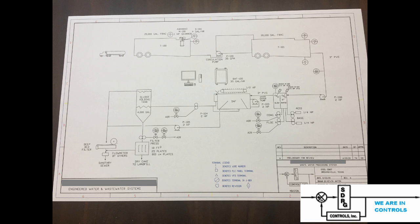The next thing to do was to develop a process diagram for this specific operation. This was a P&ID, which shows the process and instrumentation. It shows all the materials coming into the facility and all of the outflows, such as the dry cake going to a landfill and discharge going to the sanitary sewer. It also shows the computer that was logging data for all the various parameters.